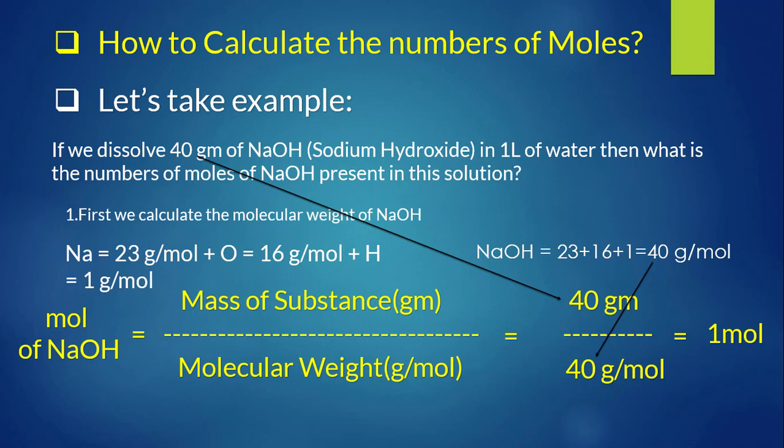To calculate moles of NaOH or any substance, use: moles = mass of substance in grams divided by molecular weight in g/mol. The given mass is 40 grams and the molecular weight is 40 g/mol, so 40 divided by 40 equals 1 mole. Therefore, the number of moles of NaOH in this solution is 1.